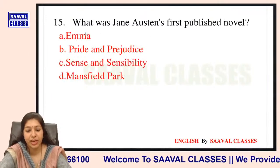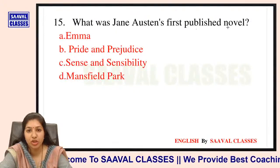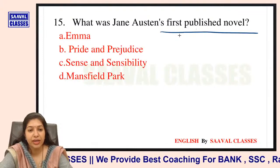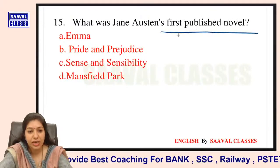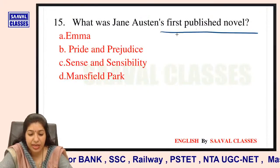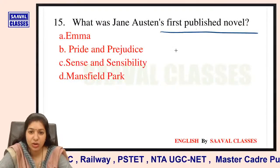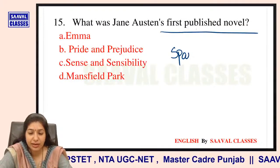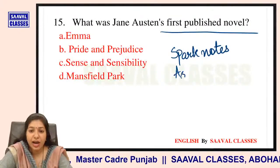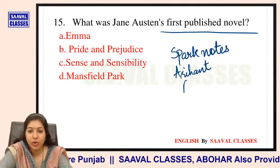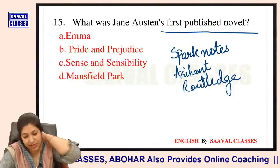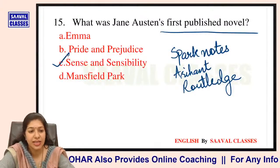Question number 15: What was Jane Austen's first published novel? Options are Emma, Pride and Prejudice, Sense and Sensibility, ya Mansfield Park? Jane Austen ke novels ki summary Spark Notes pe detail mein available hai, Arihant mein bhi hai, Routledge mein bhi hai, David Daiches mein bhi. The right answer is Sense and Sensibility.